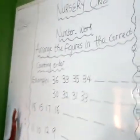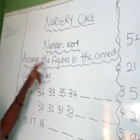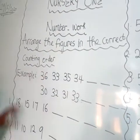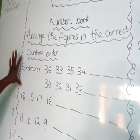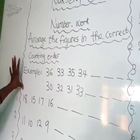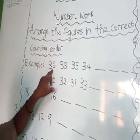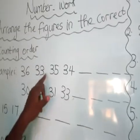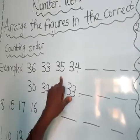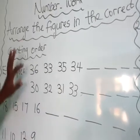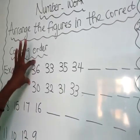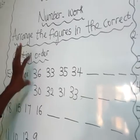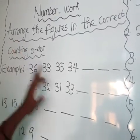Today we have arranged the figures in the correct order. These are my examples. The example says 36, 35, 35, 34. That is not how to count. Let's count it in the correct counting order.